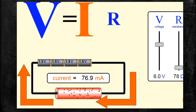Now in this case, I am going to vary the value of resistance of the conductor. At present, 6 volt potential difference is given across the conductor. The resistance of the conductor is 78 Ohm and the current passing through the conductor is 76.9 milliampere. Now I am going to increase the resistance value. Usually when the resistance of the conductor is increased, the current value will decrease.